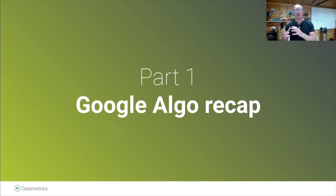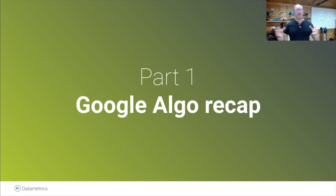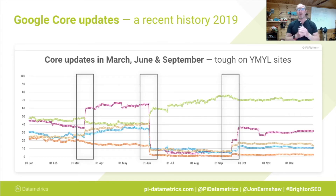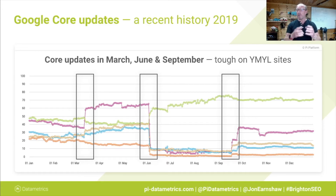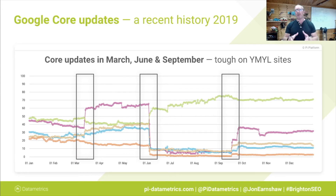The core web vitals update really dropped about a month ago, June 15th, and that is actually smearing out right now — I'm going to come back to that in a little while. Going back in time to 2019, we saw three huge — really upsetting for many websites — updates in March, June, and September. These updates really targeted heavily focused on high YMYL — your money or your life — so if your website content was likely to impact the future health, wealth, or well-being of the audience, you were potentially a target.